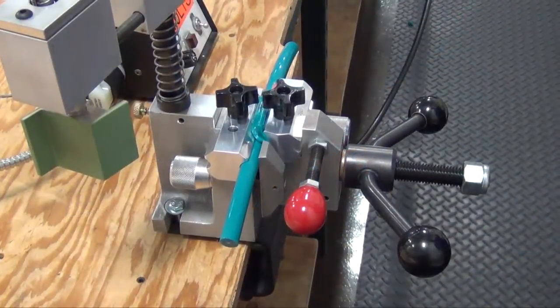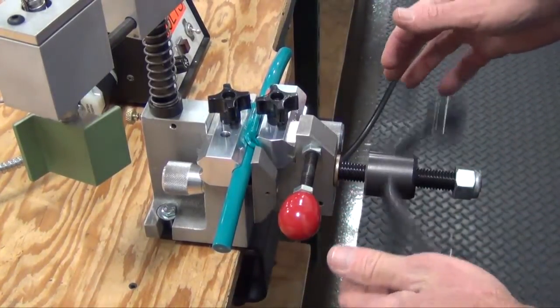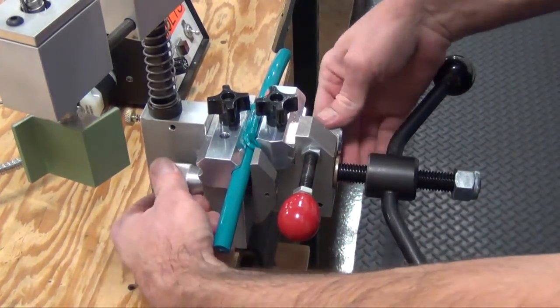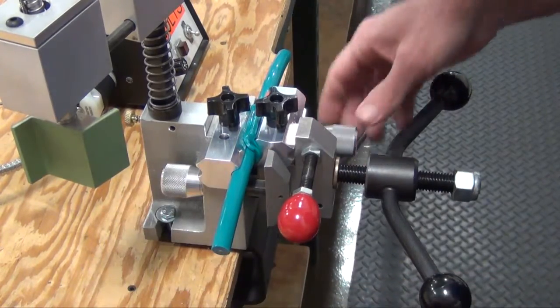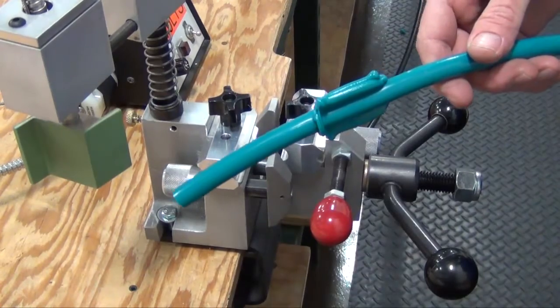After a minimum of one minute, turn large wing nut counter clockwise several turns. Loosen both knurled thumb nuts several turns and pull back on red knob on front sliding die. Remove belt from welder.